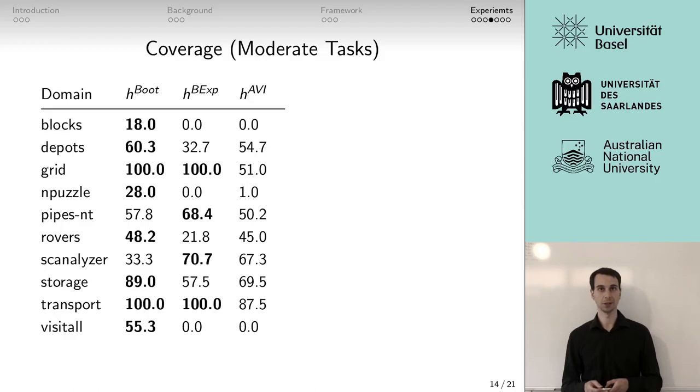The most important metric is coverage. Therefore, let's directly go to coverage on the moderate tasks, and we just take a look at our own approaches. And then we see that the bootstrapping approach wins in 8 out of 10 domains. That's quite good. The bootstrapping to predict the expansions wins in 4 out of 10. That's also good. The approximate value iteration doesn't look as good, but actually it's quite often close to being the best. And on a per-domain basis, we see that it depends totally on the domain which algorithm performs best.